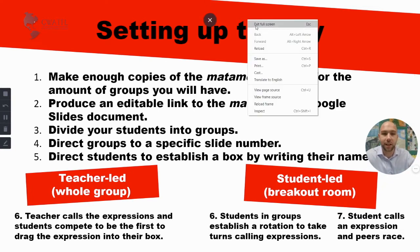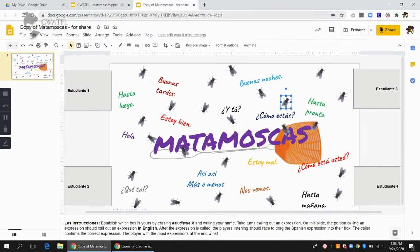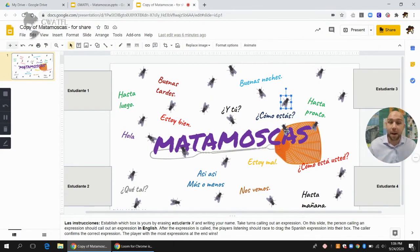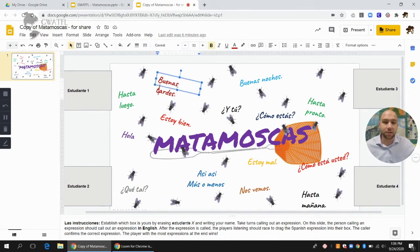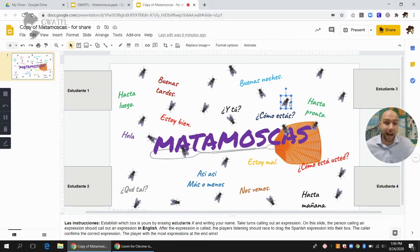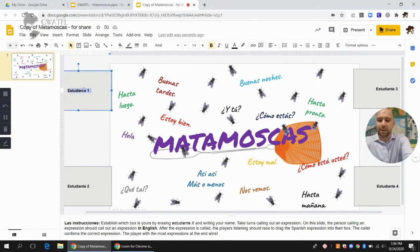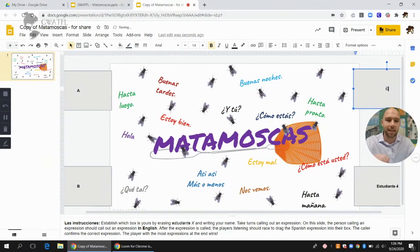Let's take a look at a copy of this together. This right here is a copy of the Matamoskas template. You can see these expressions - they're just simple text boxes. We have some fly images as distractors here. The first thing students would do is put their names in the boxes - we could have students A, B, C, et cetera.